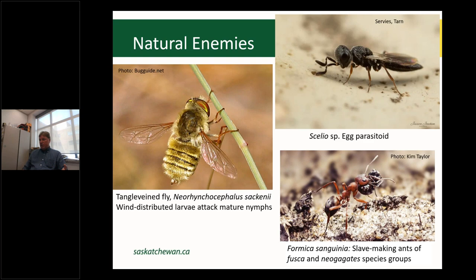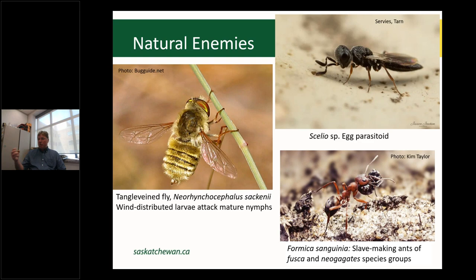An important predator of grasshopper nymphs is Formica sanguinea, a formicine ant relatively common in Saskatchewan. You'll see these with large nests — up to five feet across — in pastures, with conspicuous black and red colouration and an aggressive bite. They are also slave-makers: they send raiding parties to raid colonies of Fusca and Neo-Fusca species groups, harvesting adults, developing pupae, and eggs of their victims, hauling these back to their colonies where the new slaves become the lowest caste doing all the dirty work.